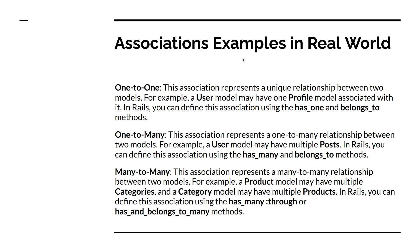The other type is many-to-many. This represents a many-to-many relationship between two models. For example, on an e-commerce platform you can consider products and categories — a product can belong to multiple categories and a category can have multiple products. Rails provides two kinds of associations to implement many-to-many: `has_many :through` and `has_and_belongs_to_many`.